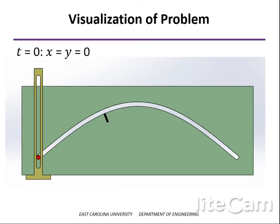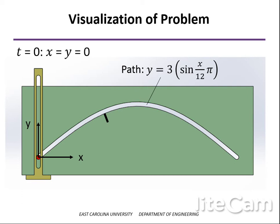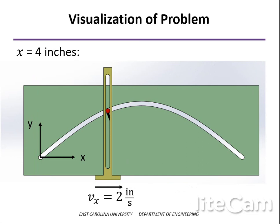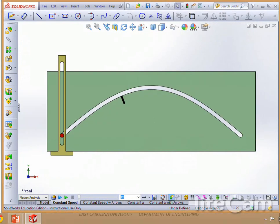Let's visualize this problem. The origin is where the particle starts, represented by the pin constrained to stay within the vertical slot as well as the slot defined by the path equation. The path is a half sine wave: the 3 is the height — it goes up to 3 inches — and the x over 12 shows that at the other end of the slot, we'll have moved 12 inches in the x direction. The marker shows where the x equals 4 inch mark is, where we find velocity and acceleration.